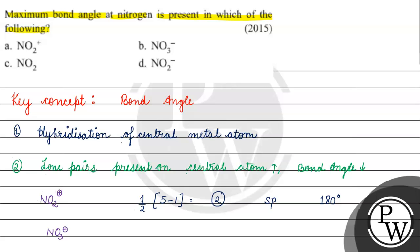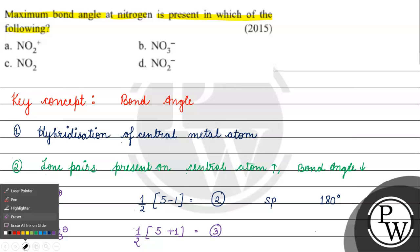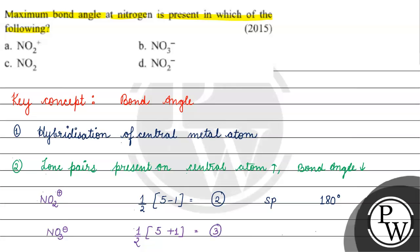For NO3-, we again use the hybridization formula — half the valence electrons of nitrogen, which is 5. Since it has a negative charge, we add it rather than subtract. This gives us a bond angle of 120 degrees.